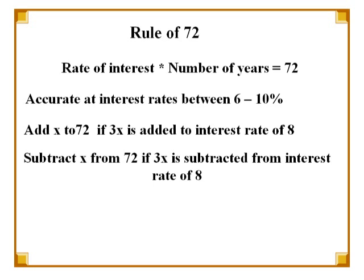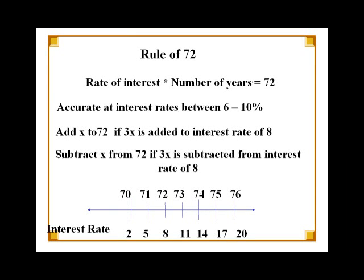For every 3 percentage points above 8%, the number 72 should be increased by 1. And for every 3 percentage points below 8%, the number 72 should be reduced by 1. The number line shown in the slide demonstrates the increase and decrease in the number 72 with the interest rate.